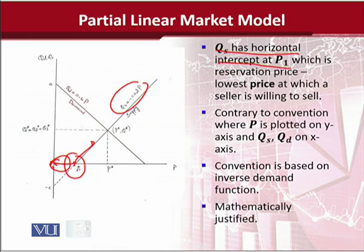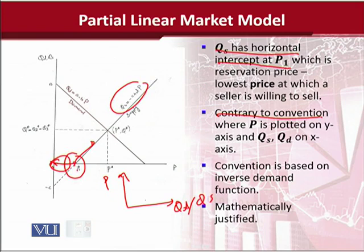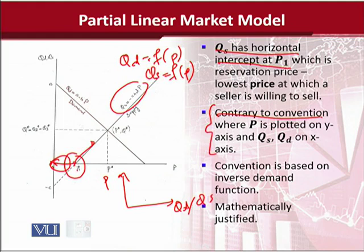This is something contrary to what we usually see, because the convention of plotting Q and P is opposite to what we have done here. In our usual practice, we put QD and QS on the x-axis and P on the y-axis. But here, since QD and QS are functions of price, the dependent variable comes on the y-axis and the independent variable on the x-axis. This is the mathematical interpretation. The diagrams in economics textbooks are more suitable from the inverse demand function perspective, whereas here we are dealing with the direct demand and supply functions.